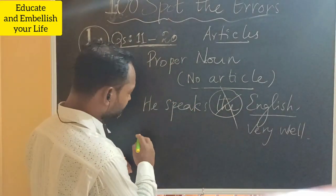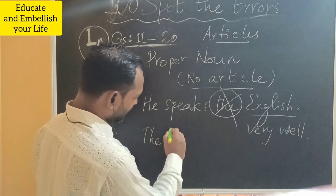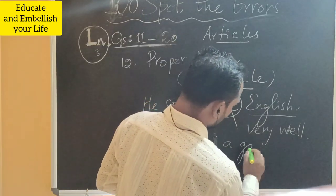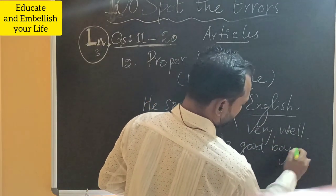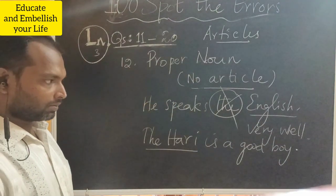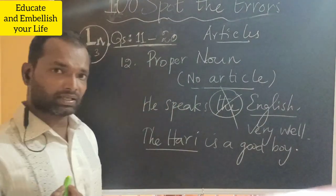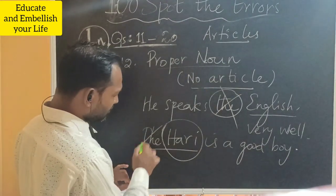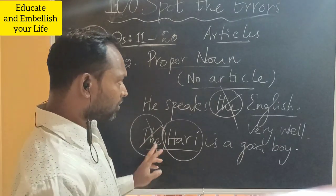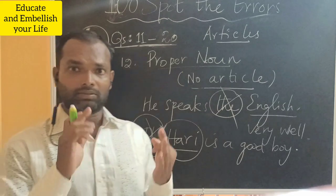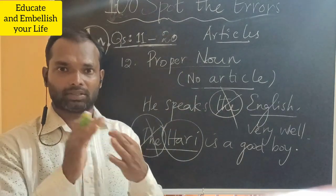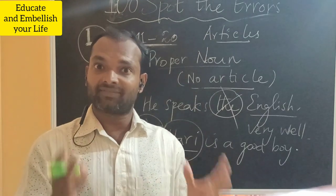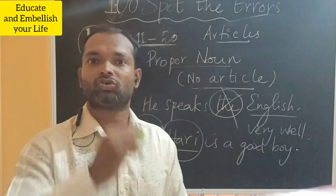Take for example: 'The Hari is a good boy' — there is some mistake in this sentence, because Hari is a proper noun. You should not use any article — 'a' or 'the.' So before a proper noun, we don't use articles. Rectify the mistake and enrich your language.